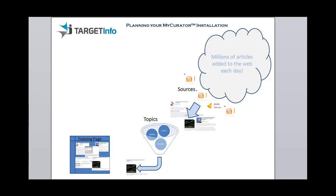The training page is a private page only you can see, and it is the source of the articles you are going to curate to your blog. You can train MyCurator by telling it which articles you like or don't like, and it will weed out a lot of the junk that you get in the feed or alert.